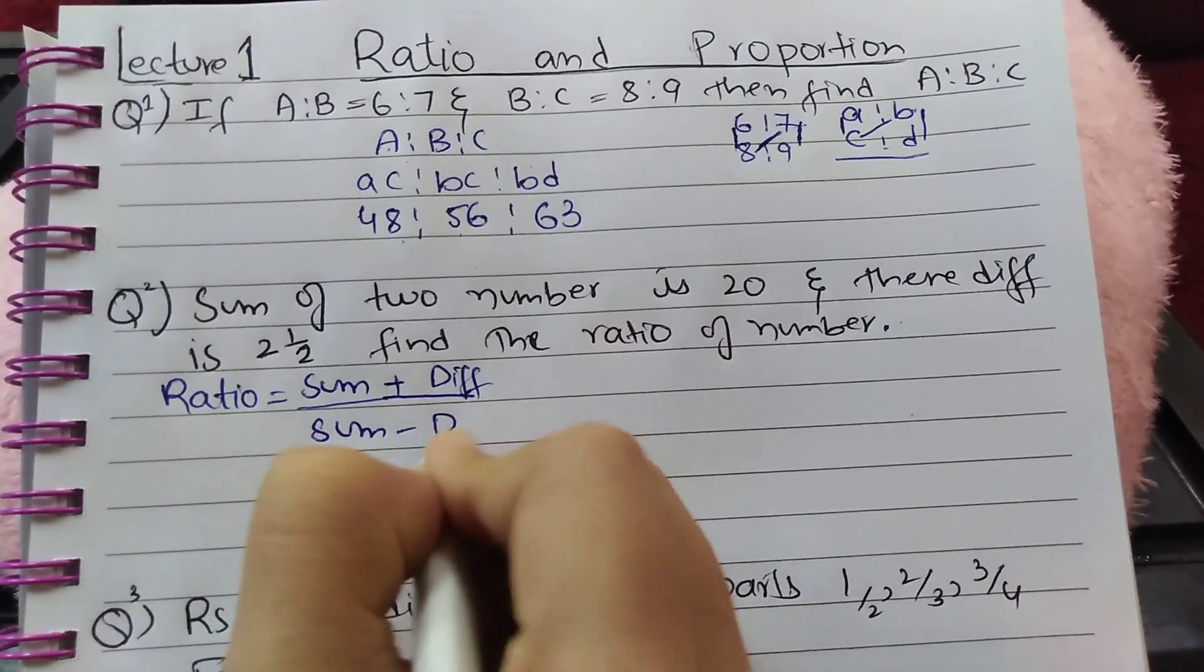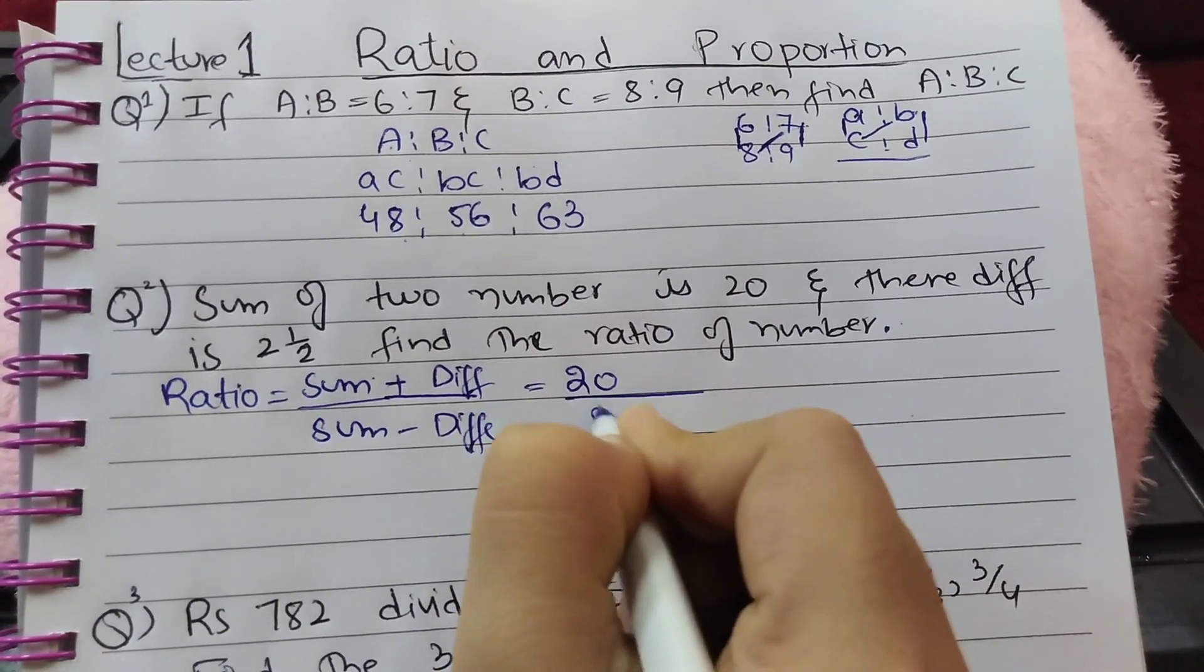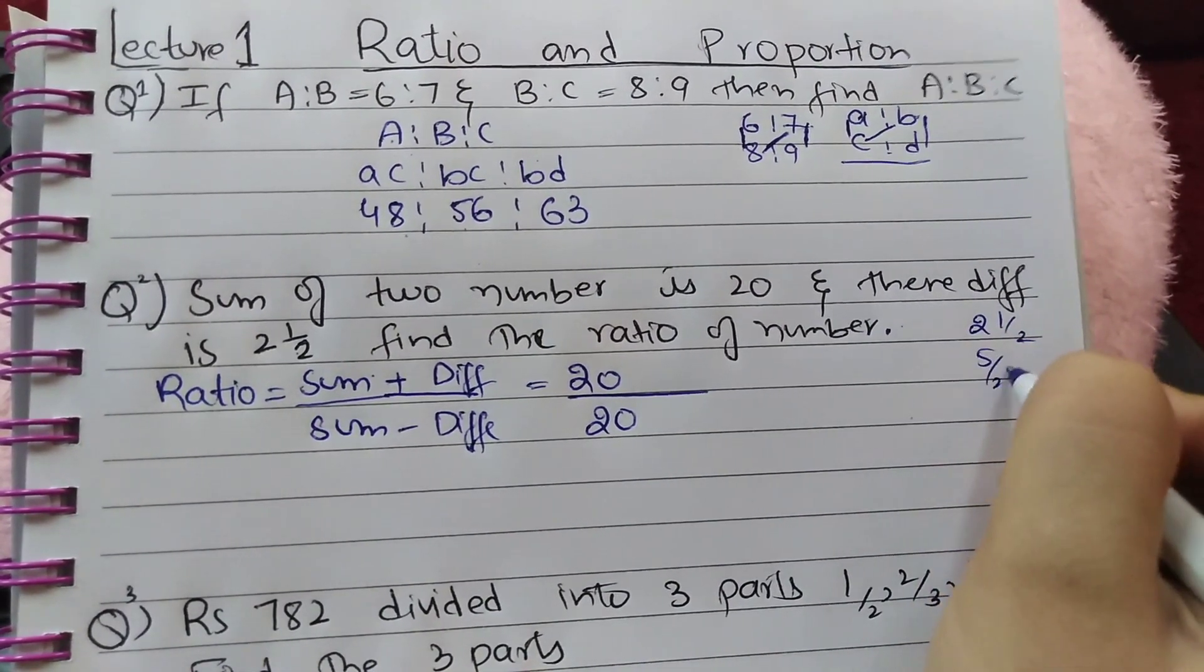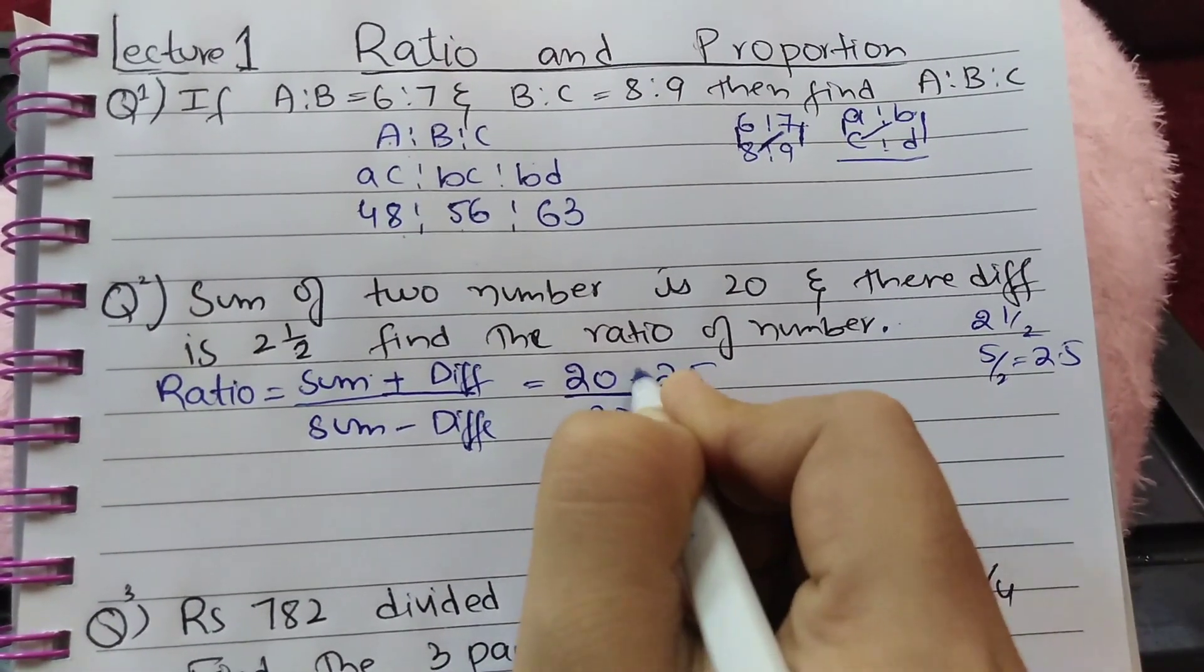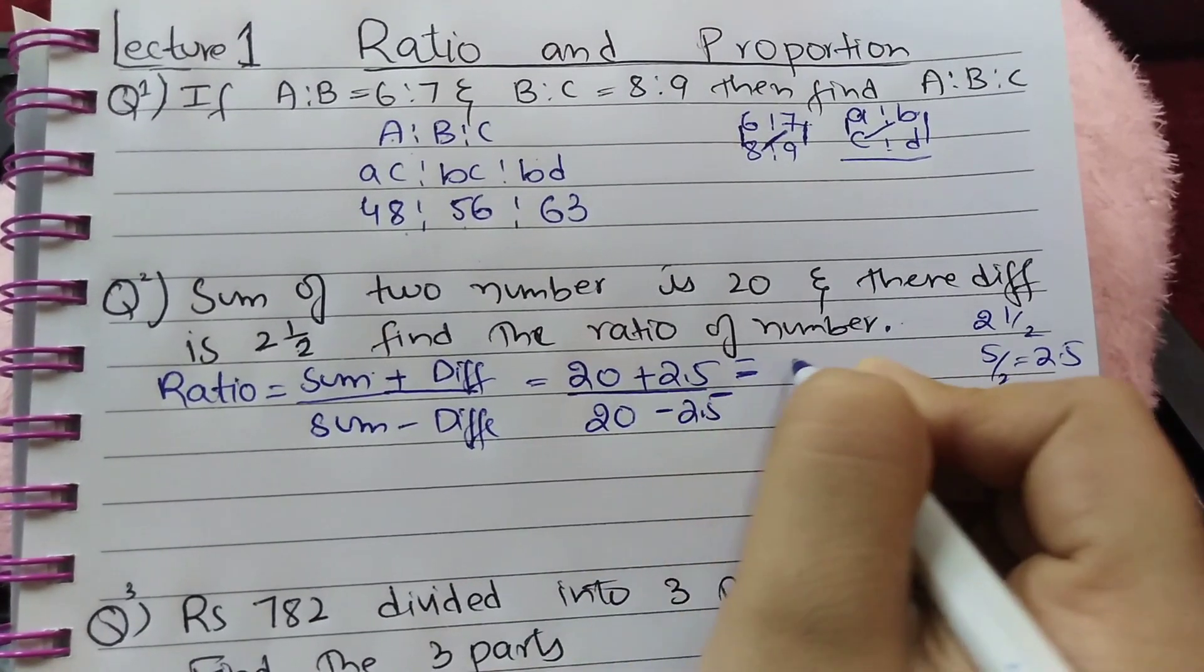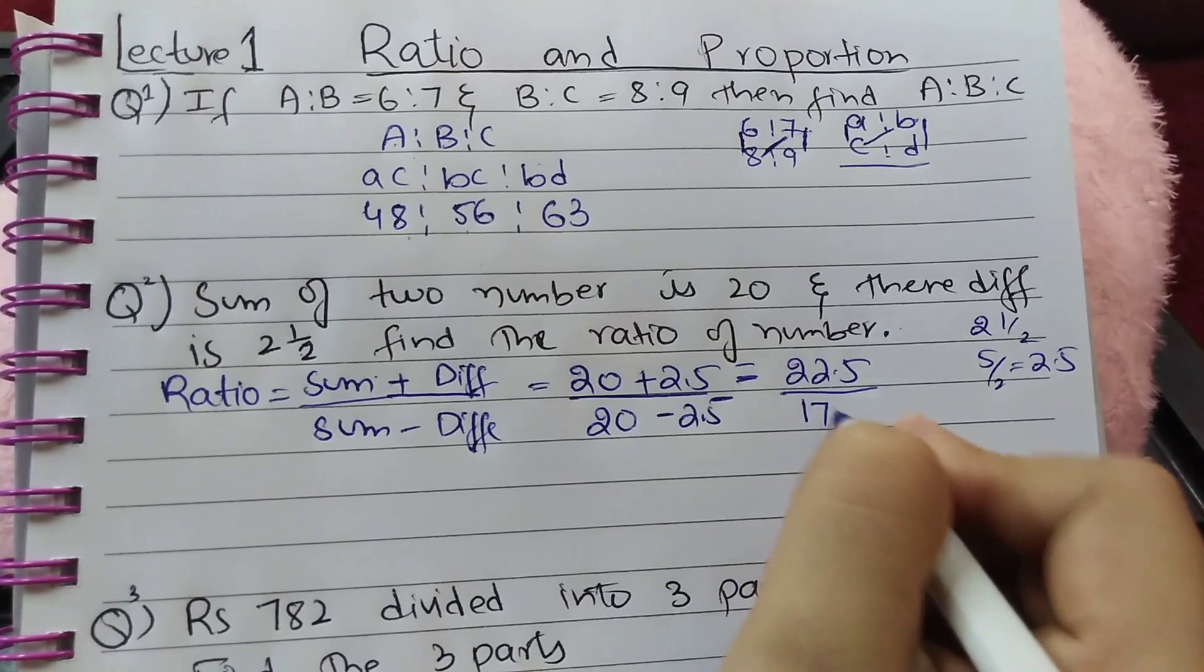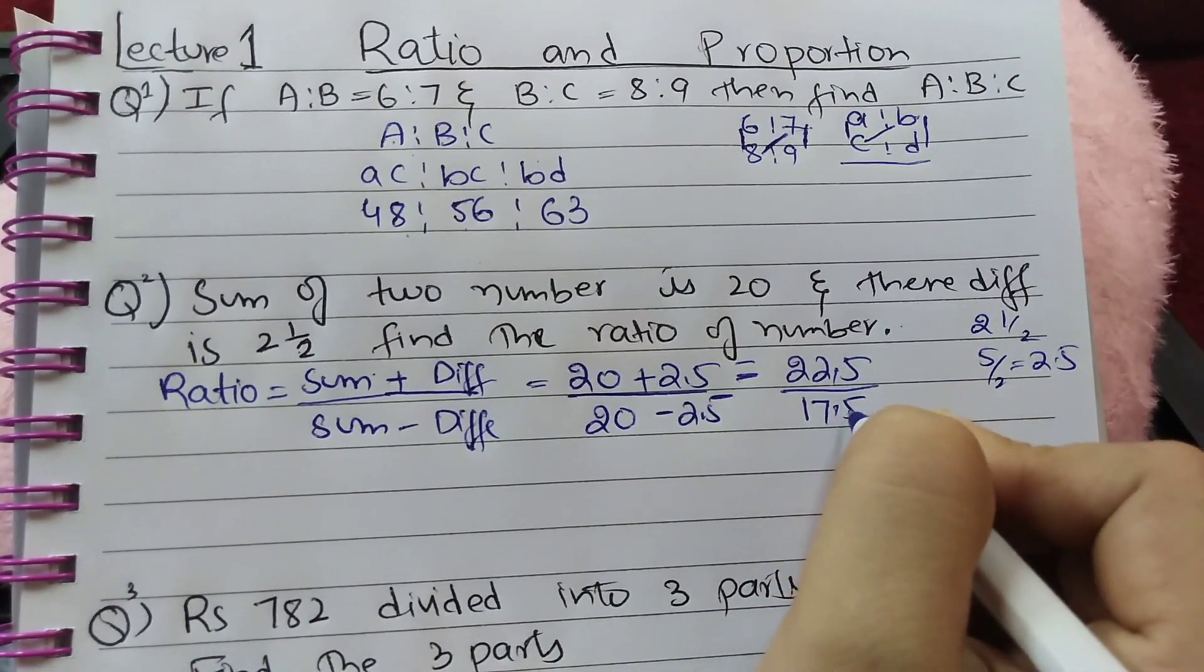The sum is 20. The difference is 2 × ½, which equals 5/2 = 2.5. So we have (20 + 2.5):(20 - 2.5). 20 + 2.5 = 22.5 and 20 - 2.5 = 17.5.